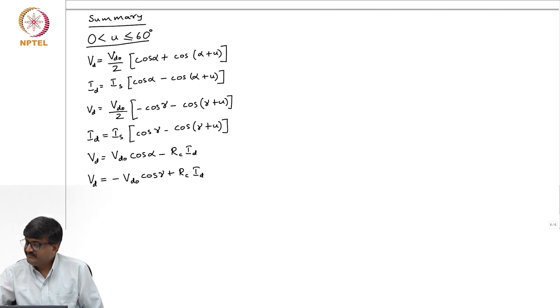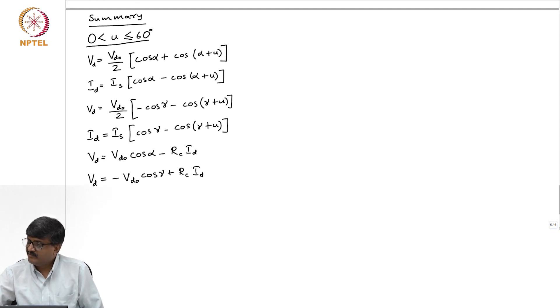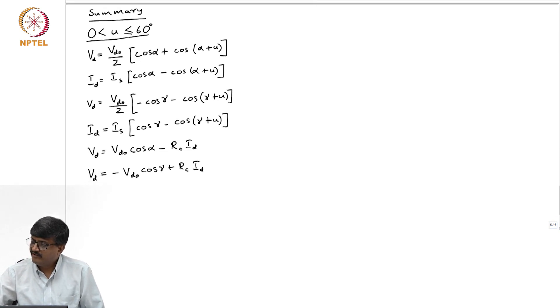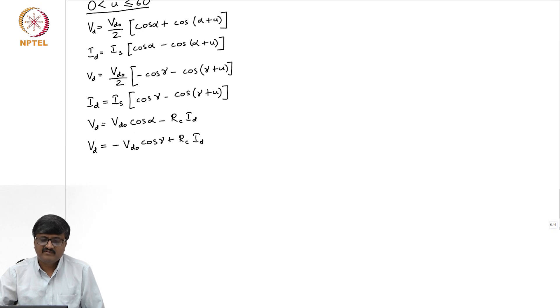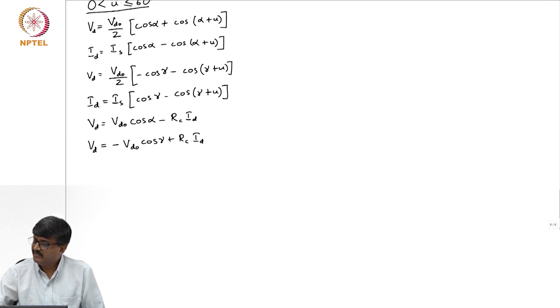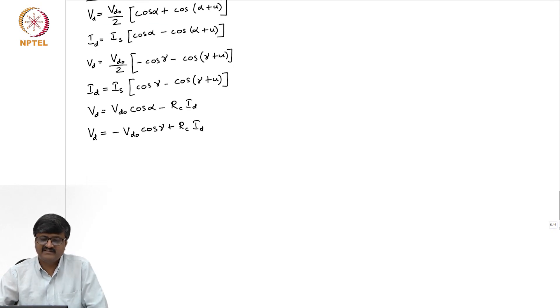There is also an equation relating Vd, Vdo, alpha, Rc, and id: Vd equals Vdo cos alpha minus Rc times id. And the last equation relates Vd, Vdo, gamma, Rc, and id: Vd equals minus Vdo cos gamma plus Rc times id. These 6 equations were obtained for u greater than 0 and less than 60 degrees.